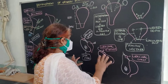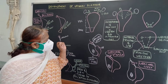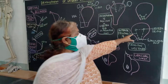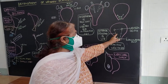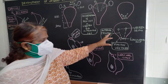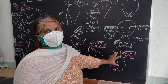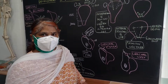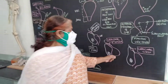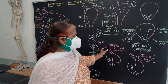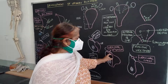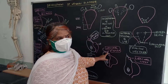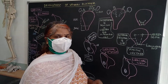This is all about the development of the urinary bladder and the explanation of why the internal trigone is of mesodermal origin. These are the different varieties of abnormalities of the urachus, which can come as a short note question. You also need to be able to explain why urine comes out through the umbilicus in a newborn — this is the developmental reason.